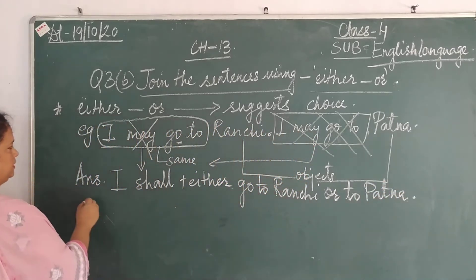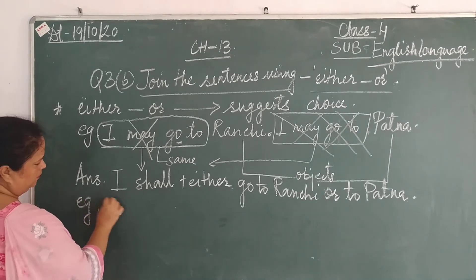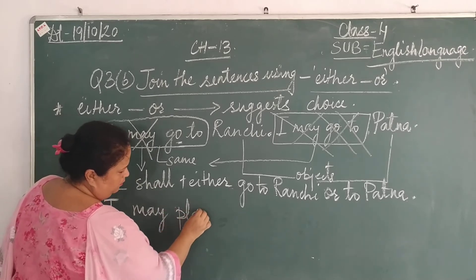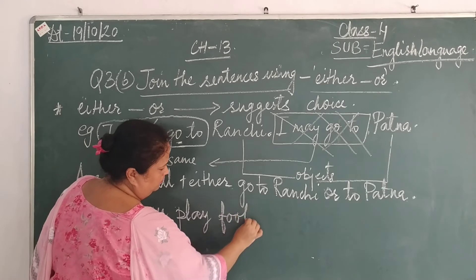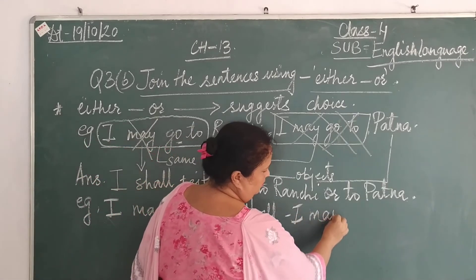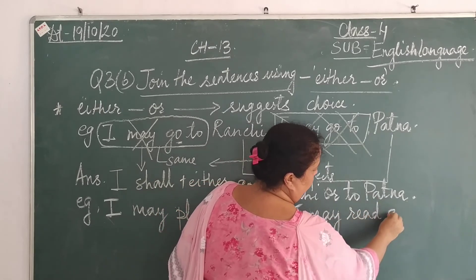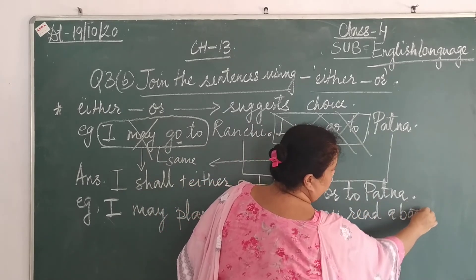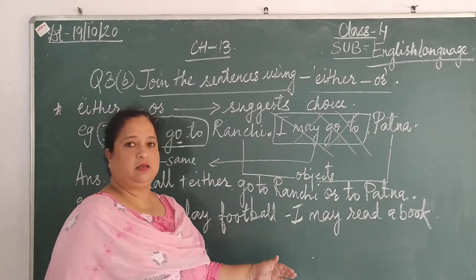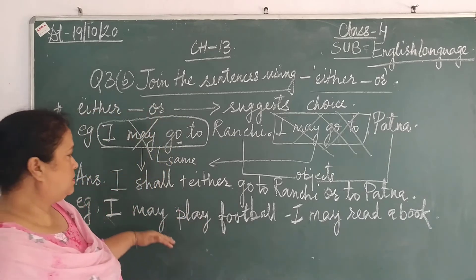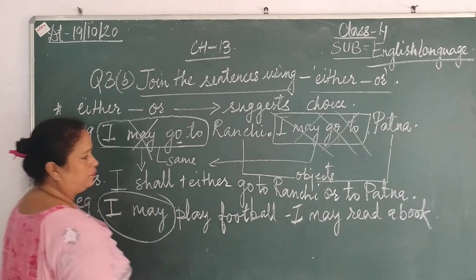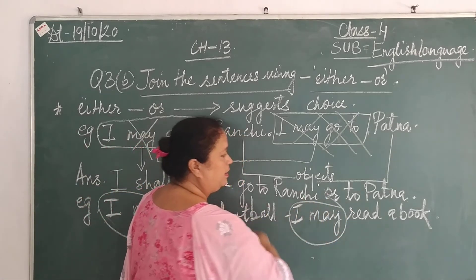So let us have a look at another sentence: 'I may play football.' Now let us follow the rules again. First of all, let us see the words that are similar in both sentences — similar means same, alike. So 'I may' appears in the first sentence, and in the second sentence again we have 'I may.'